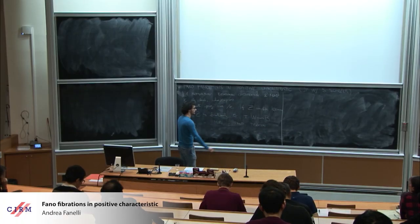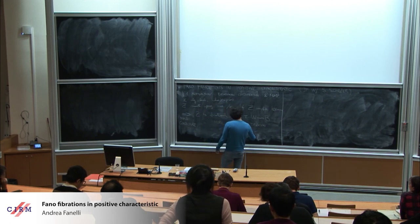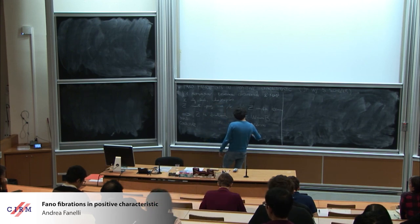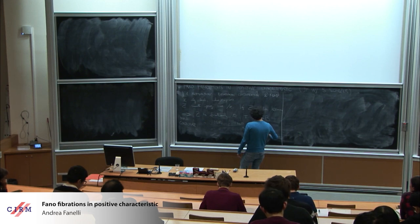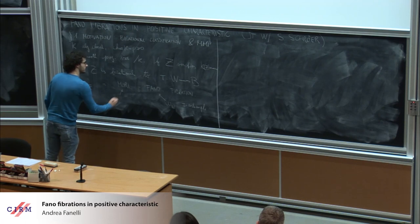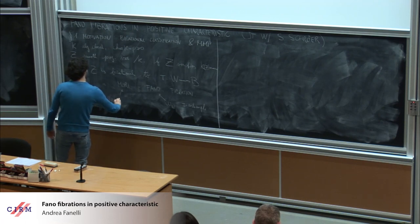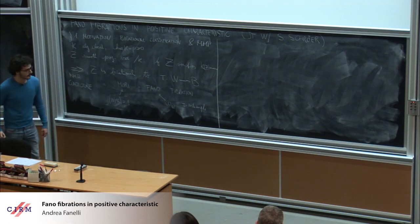So the condition Fano, I'm just saying that if I look at the omega W, this guy is going to be pi anti-ample. And the Mori condition is that if I look at the relative Picard rank of W over B, this is minimal, so equal one.